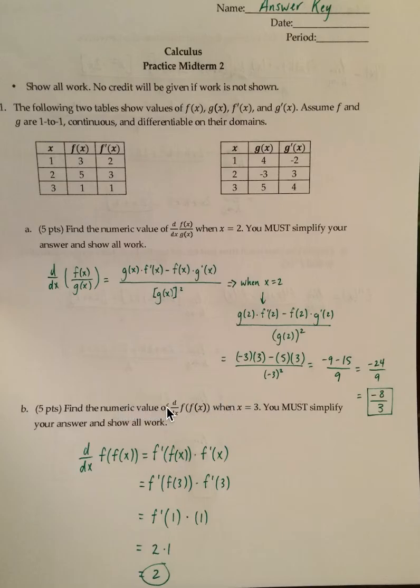Part b, find the numeric value of the derivative of f of f of x. Be careful here. This is not f of x times f of x. This is f of f of x. So what's going to happen here is you're going to need a chain rule.